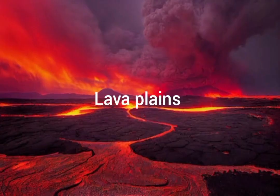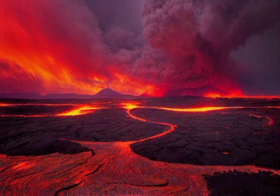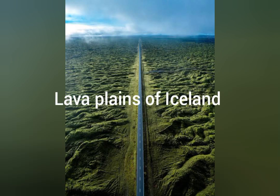The next type of Plains are the Lava Plains. These are formed when there is a volcanic eruption and lava flows out of the volcano or fissures, spreading over a larger area and the surrounding regions. An example is the Lava Plains of Iceland.